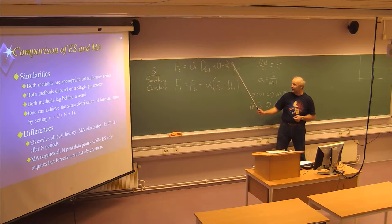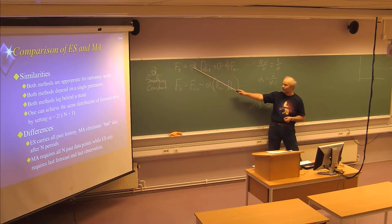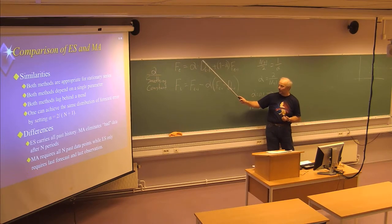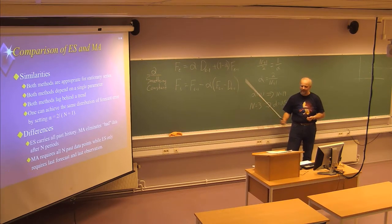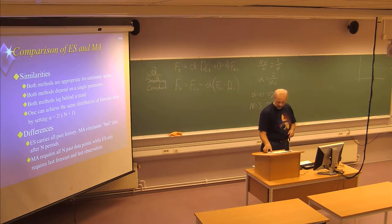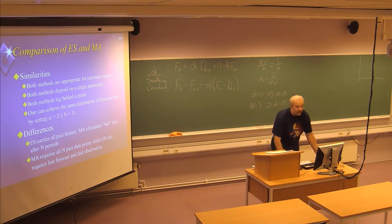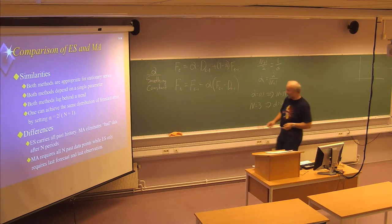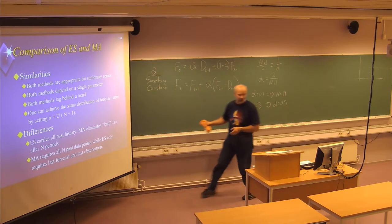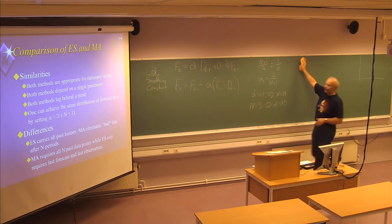An important thing is to decide or find the value of the smoothing constant — the alpha value — which tells the weight of the latest demand compared to the latest forecast. Let's now use the same example as we showed for the moving average and show how we can use the exponential smoothing method to make a forecast for the coming periods.